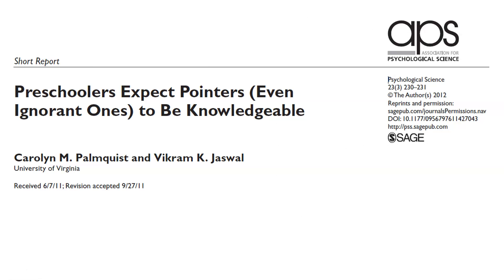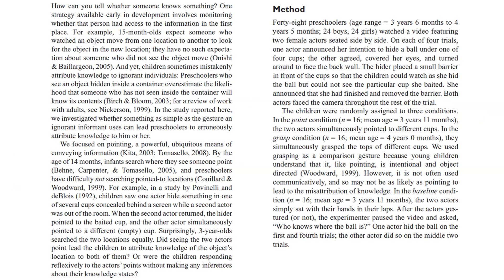Let's go through a second paper called 'Preschoolers Expect Pointers, even ignorant ones, to be knowledgeable.' The introduction reads: 'How can you tell whether someone knows something? One strategy available early in development involves monitoring whether that person had access to the information in the first place. For example, 15-month-olds expect someone who watched an object move from one location to another to look for the object in the new location. They have no such expectation about someone who did not see the object move. And yet, children sometimes mistakenly attribute knowledge to ignorant individuals.'